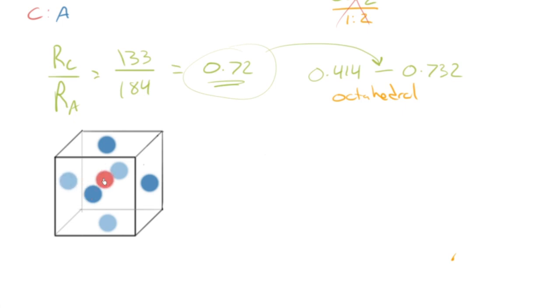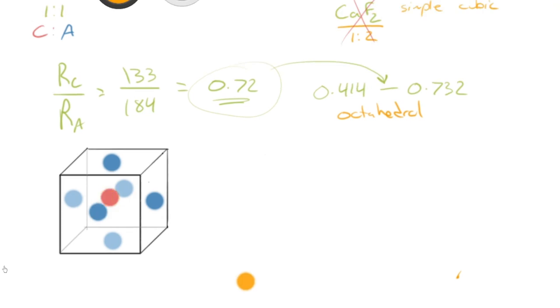And then if we go ahead and we fire the cation into the center, when we cover rock salt, you remember what we said was, this central cation touched front to back, bottom top, and right left. And that was the coordination number of 6, or octahedral site.